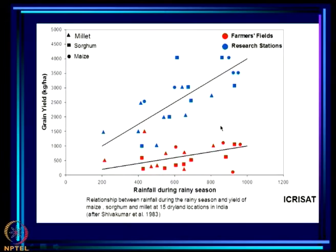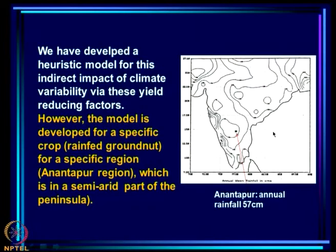There is a large difference between agricultural research station yields and farmers' fields, particularly when yields are high, which can also be understood as the gap between crop model yield and district average yield. We have developed a heuristic model for the indirect impact of climate variability. The yield-reducing factors considered are pests, diseases, and weeds, and we incorporate the impact of wet spells and dry spells on triggering these pests and diseases.